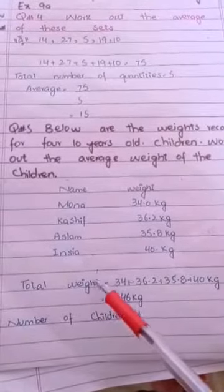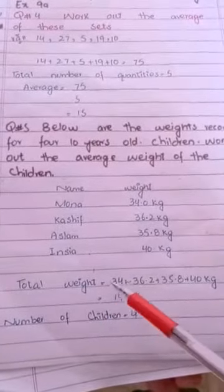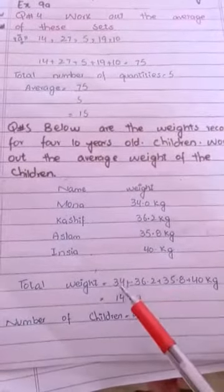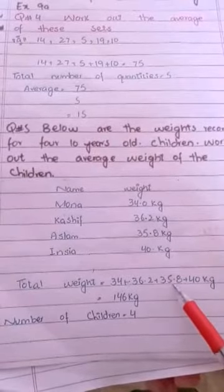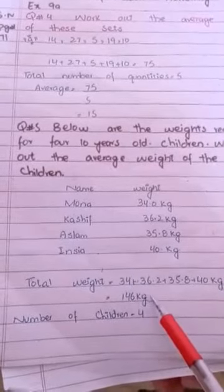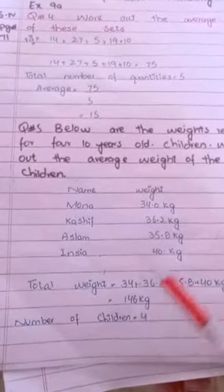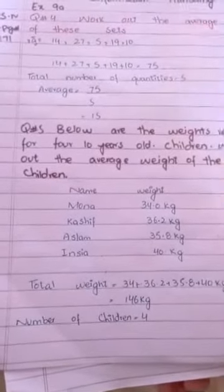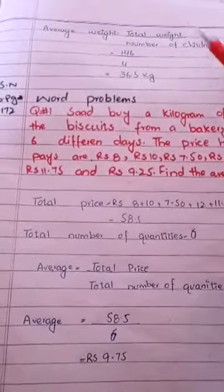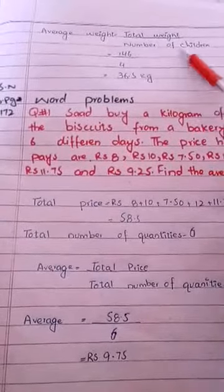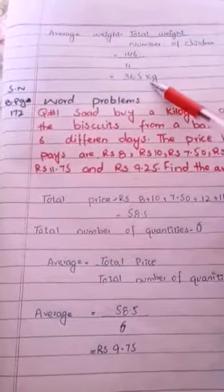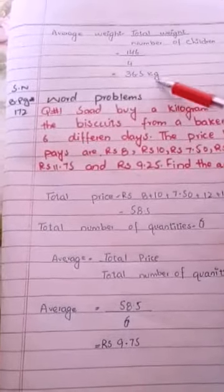Total weight find out करेंगे। Total weight find out करने के लिए हम सारी quantities को add कर देंगे: 34 plus 36.2 plus 35.8 plus 40 kg = 146 kg। Number of children: 1, 2, 3, 4। 146 को 4 पर divide किया तो average weight = 36.5 kg।